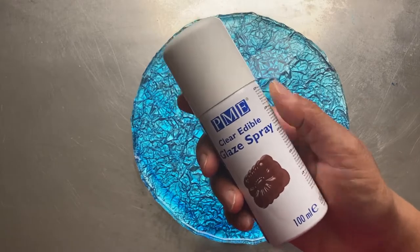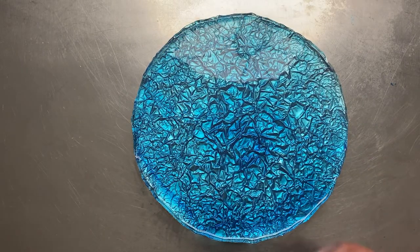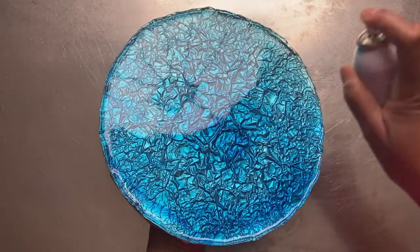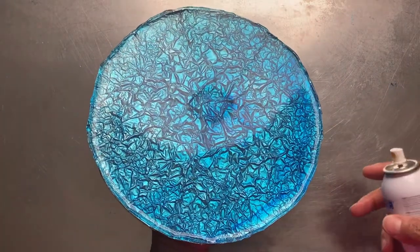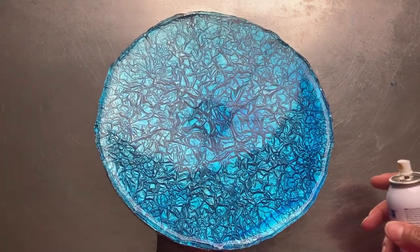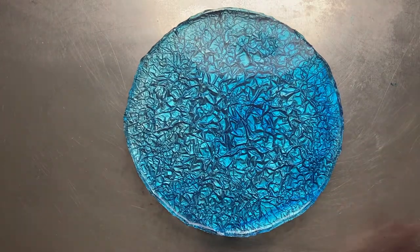Super important, always use edible glaze spray to preserve the clear finish of the isomalt. It creates a thin barrier against moisture that can cause the isomalt to appear cloudy. It's also best to create this base the day of the celebration to avoid having to store it in the refrigerator.